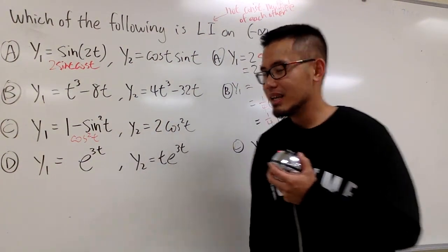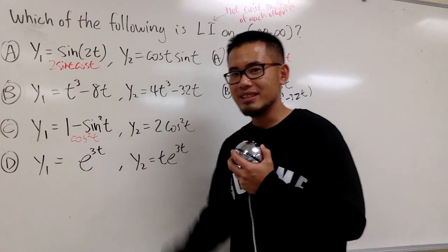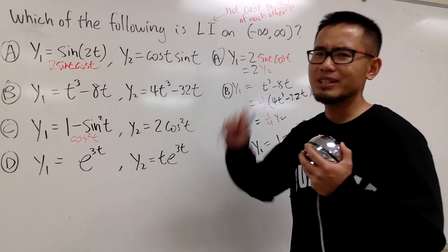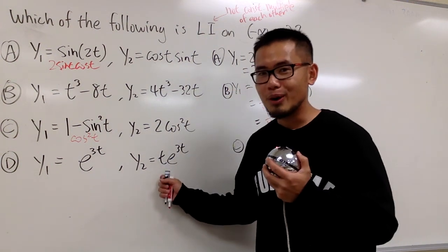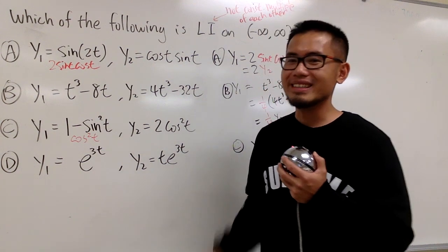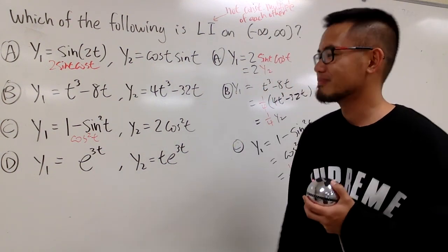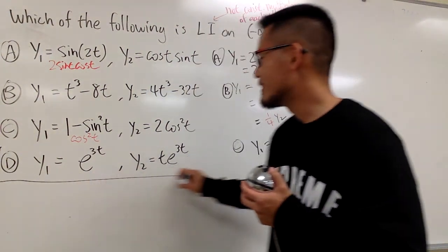Last one. This is e to the 3t, and this is t times e to the 3t. I have some multiple, but this is t times the first one. It's not constant multiple though.